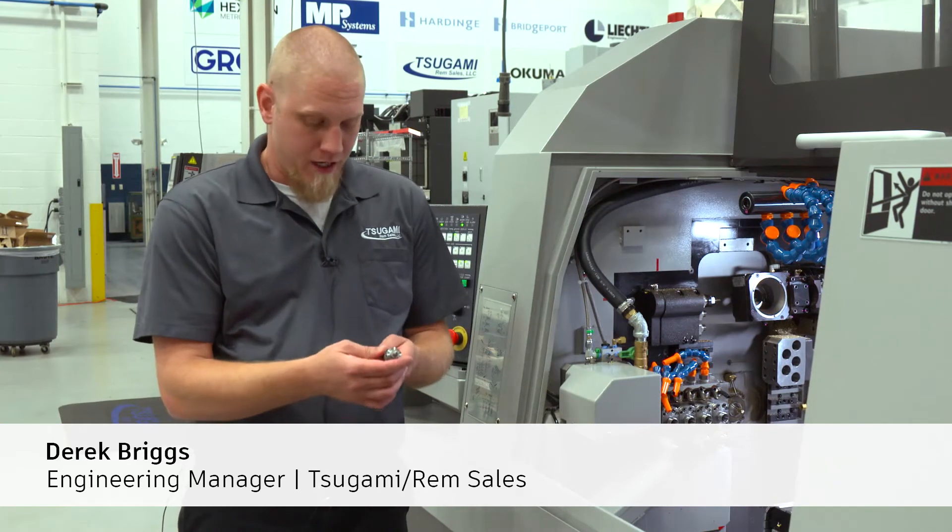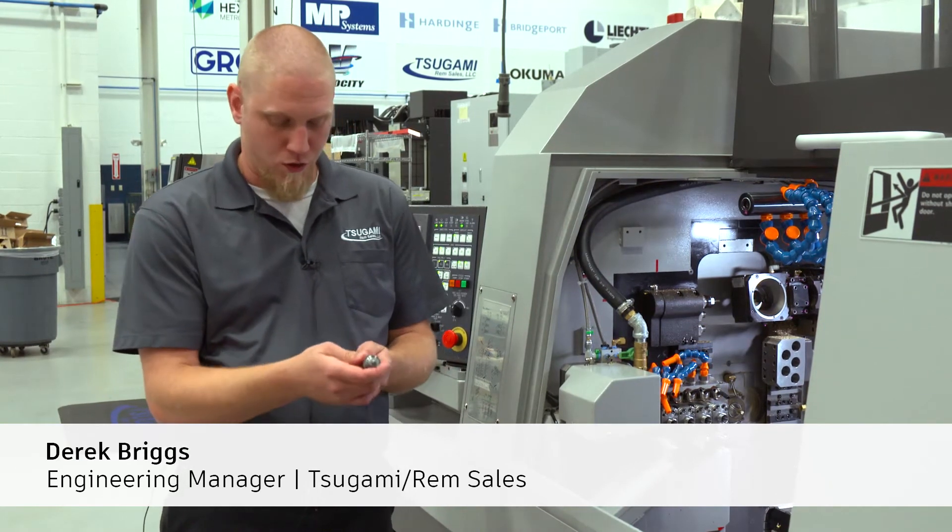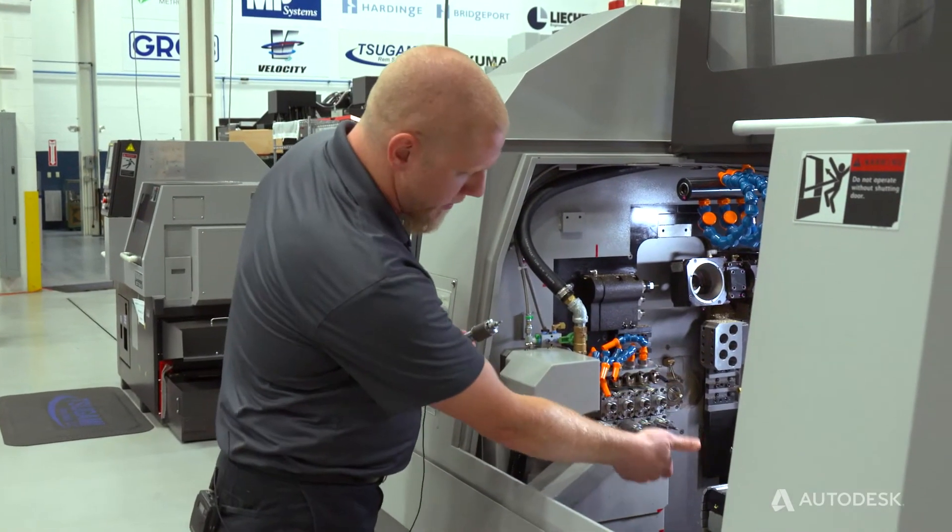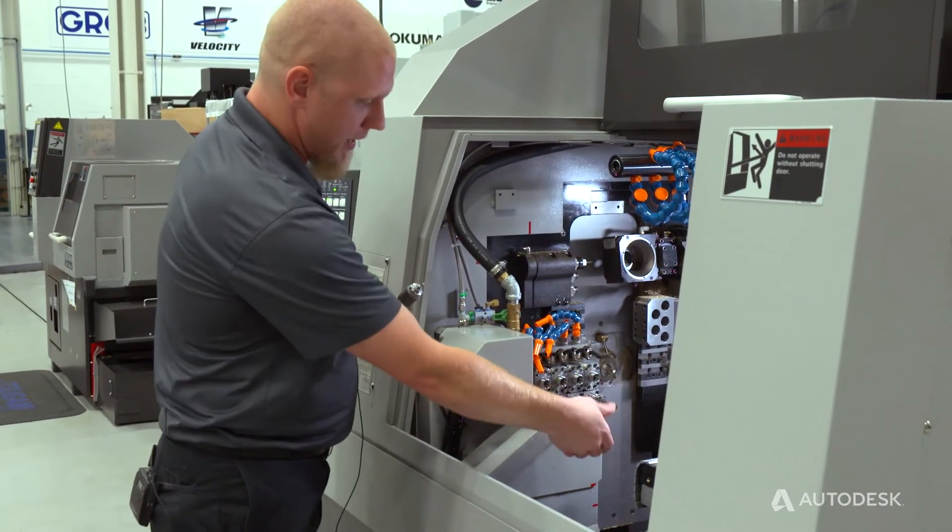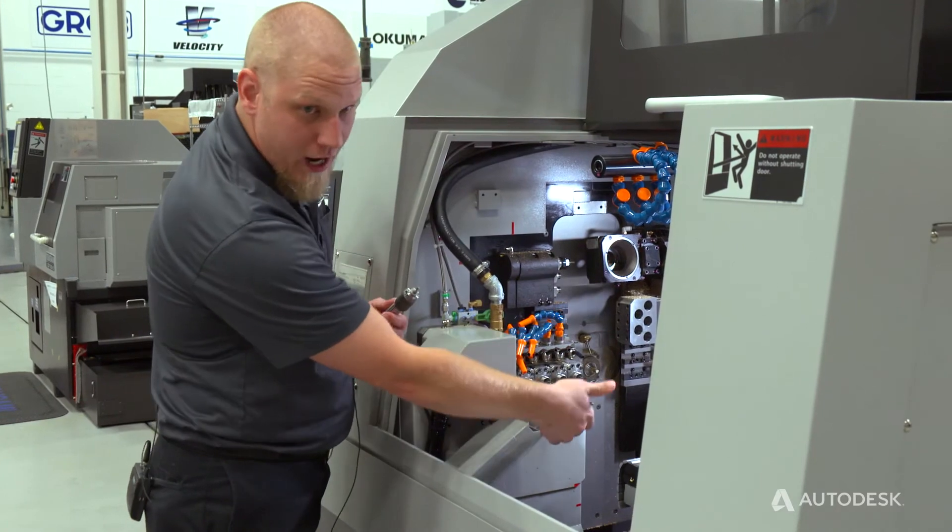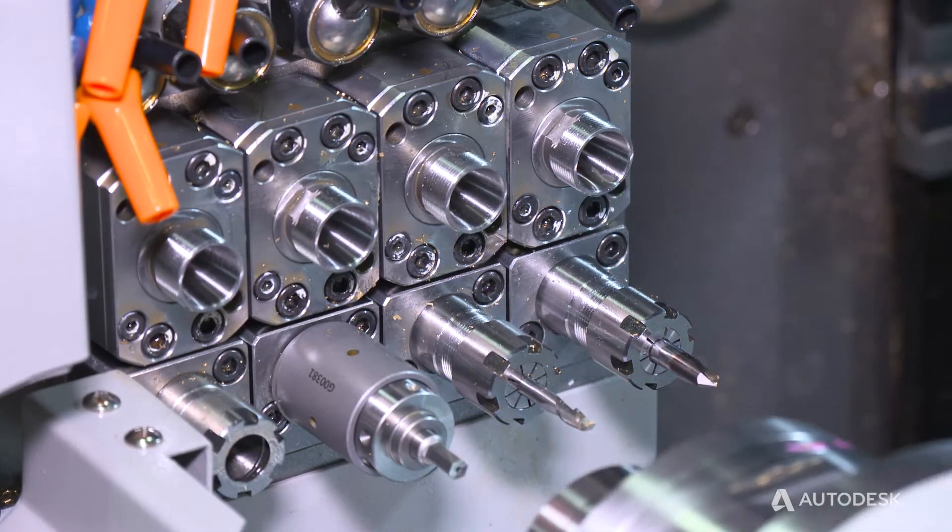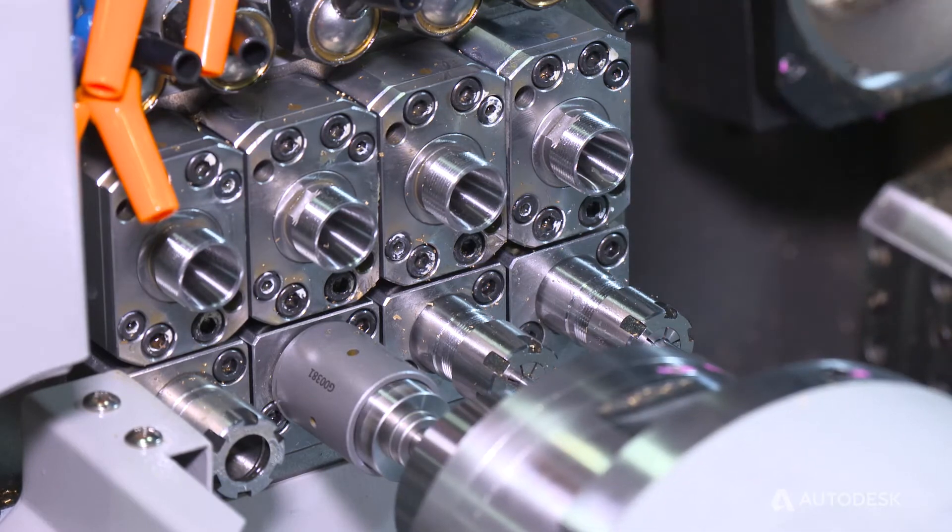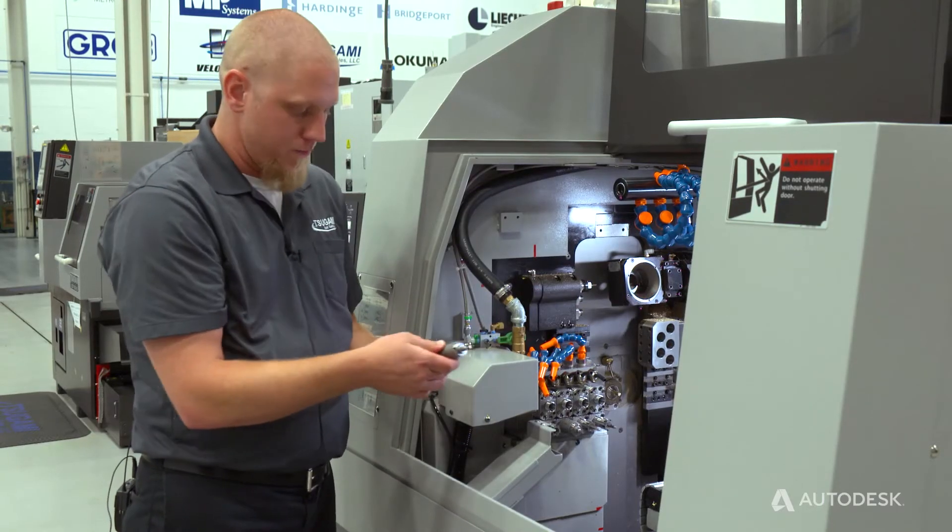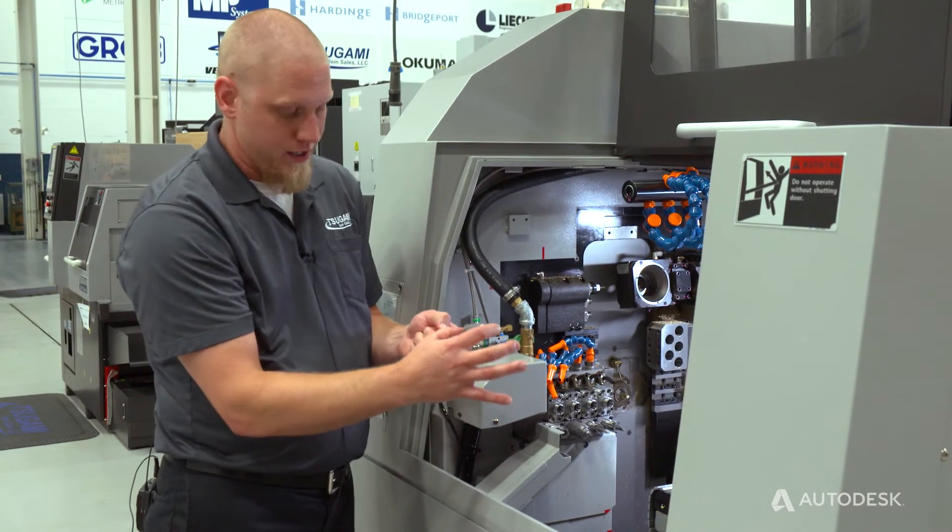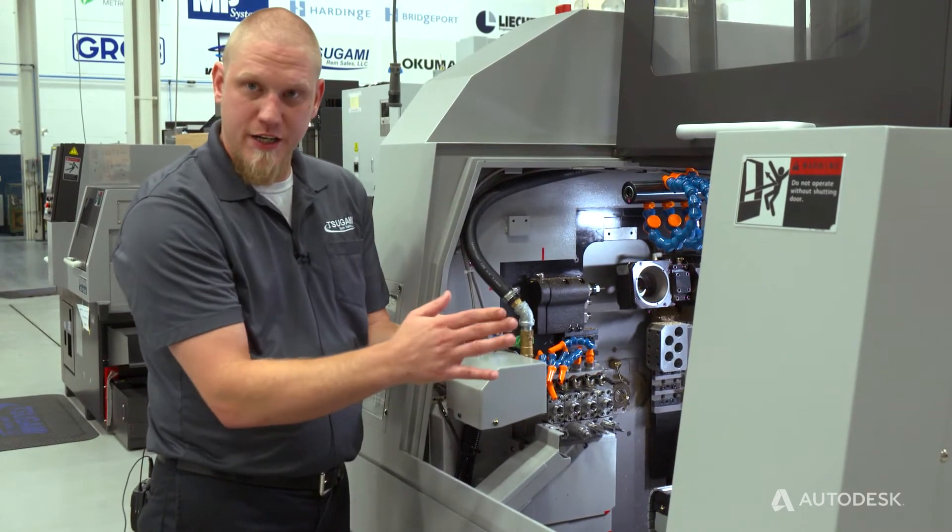The rotary broach system that we're using from GenSwiss, one of the key benefits to this holder is the Y axis on the machine. On this back working tool block, it actually has 80 millimeters of Y axis stroke. So you can dial in your pocket right on center just like you would a spot drill, a tap or any other tool. The benefit of this holder is it is already on center. The distance from here to here is actually a known distance and it's on centerline.